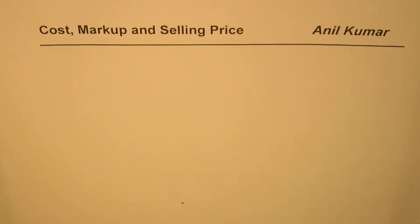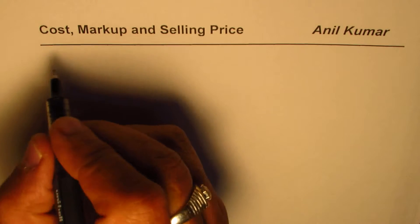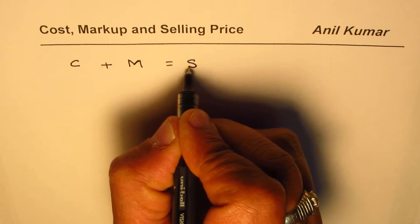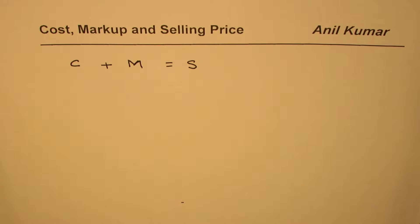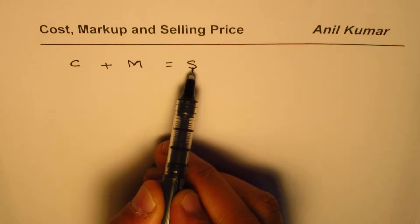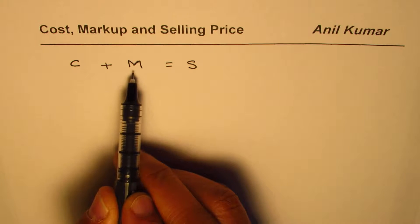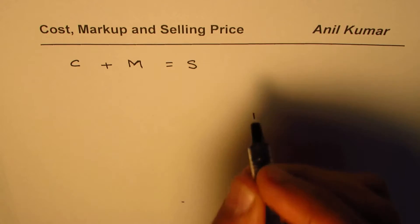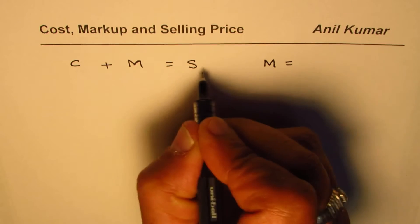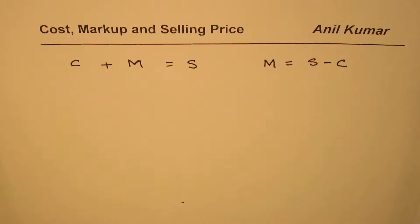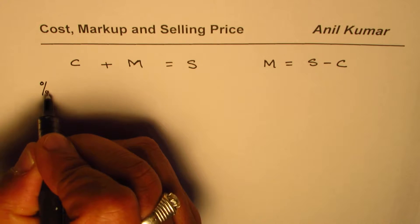I'm Anil Kumar and in this video we'll discuss cost, markup, and selling price relations. As you know, cost plus markup (M) equals selling price (S). In any business, they buy an item at a particular cost, increase the price, and sell it. That increased amount is the markup. You can rearrange this equation to find markup M as equal to selling price minus cost.